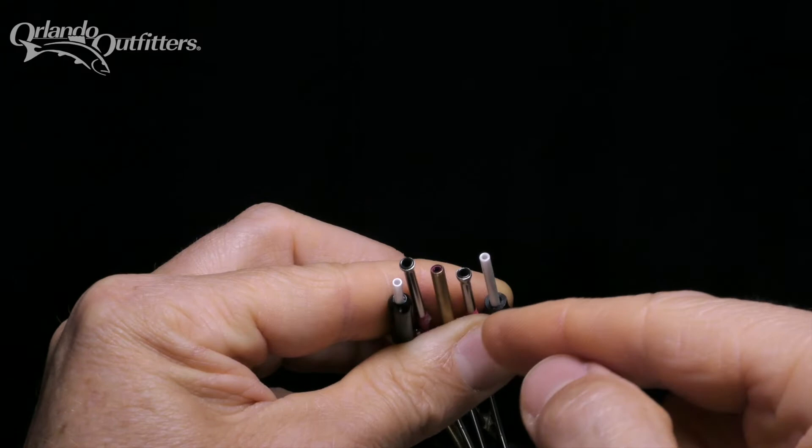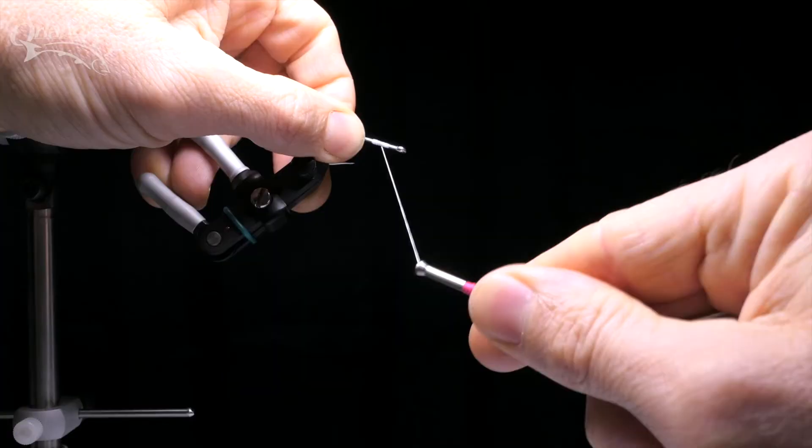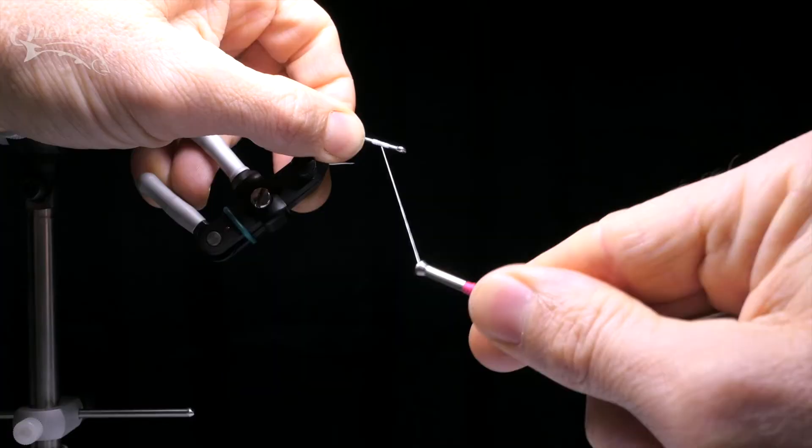If your bobbin doesn't have an insert and isn't made of an adequately hardened material, the thread may wear a groove over time which can create a sharp edge and cut the thread. If this happens, it's time to get a new bobbin.